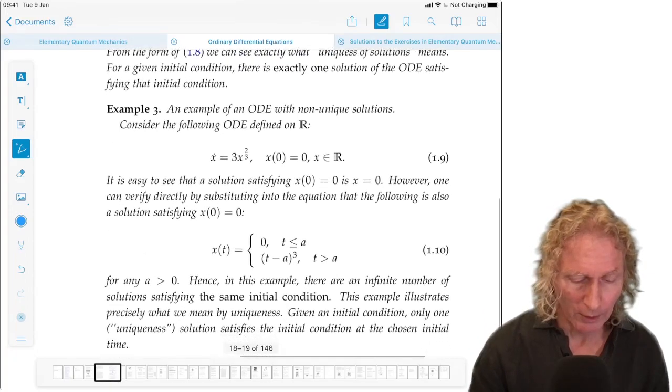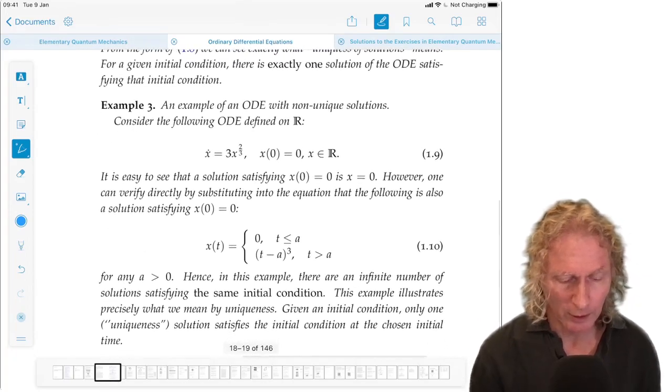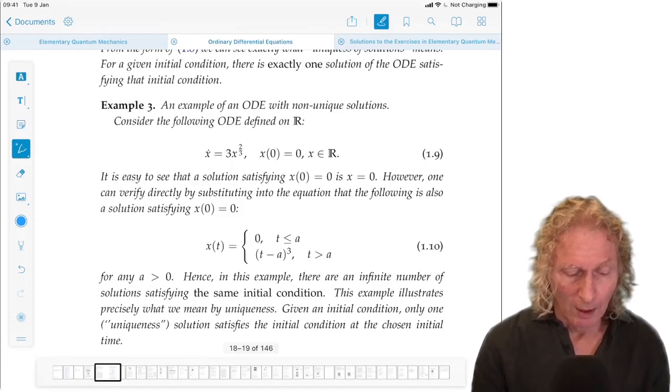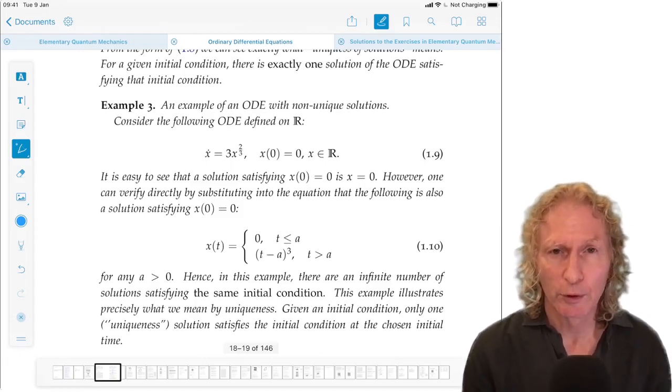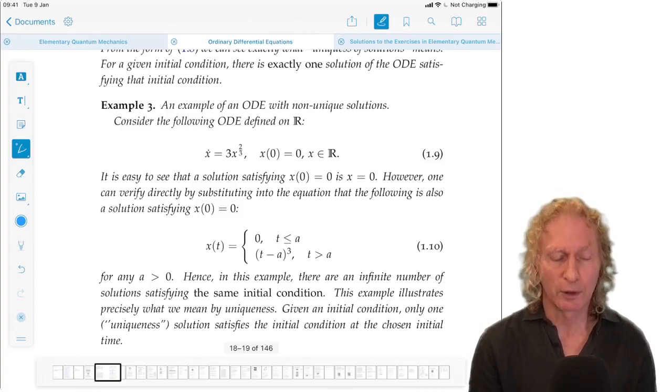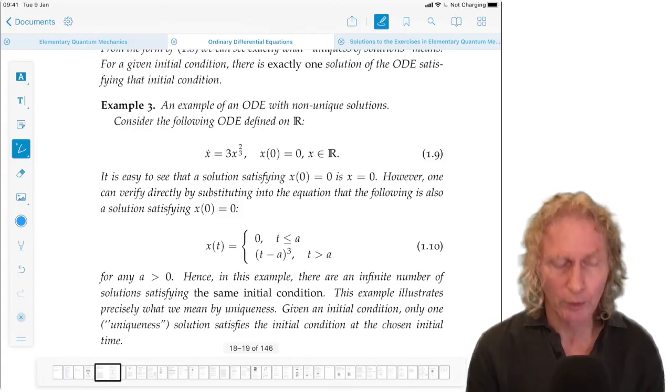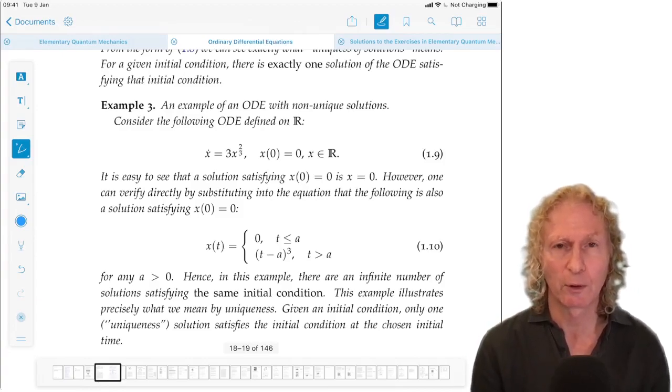Now here's another example, one-dimensional autonomous, which has an infinite number of solutions satisfying the same initial condition. So x dot equals 3x to the two-thirds. The initial condition is x(0) equals 0.